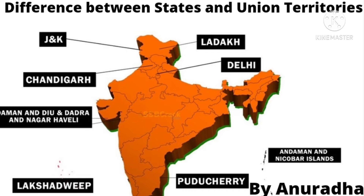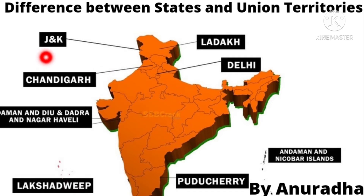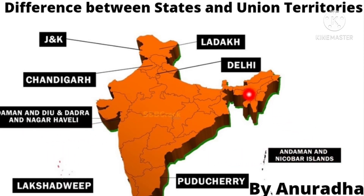These are the union territories — you can use this map in your answer also. They are: Jammu and Kashmir, Chandigarh, Daman and Diu, Dadra and Nagar Haveli, Lakshadweep, Puducherry, Andaman and Nicobar Islands, and Delhi. That is a total of eight union territories right now.